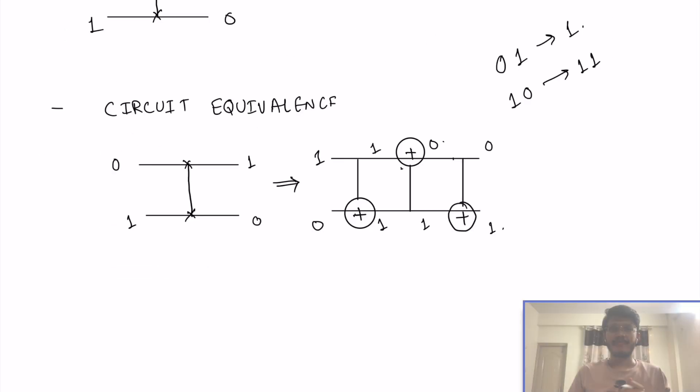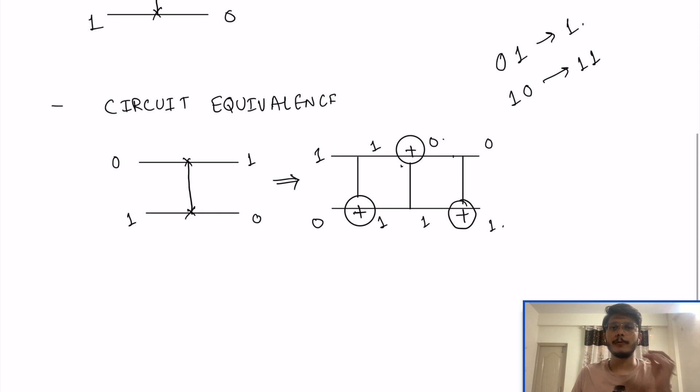Now, the equivalent of swap gate can be proved using three CNOT gates or sometimes it can be proved using two CNOT gates as well. For example, you have currently your two states at 0 and 1. So, the expected output is 1 and 0 after swapping.